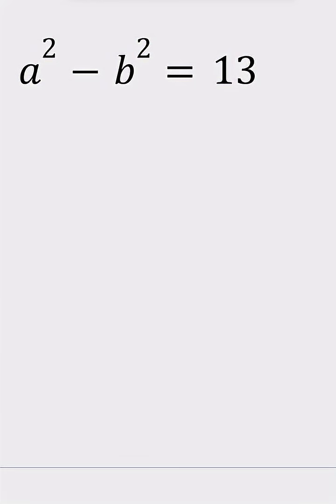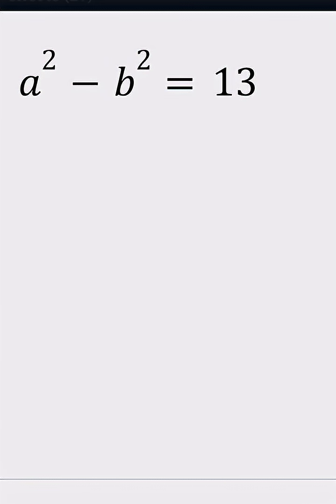Hello everyone. In this video we're going to be solving a Diophantine equation. So a and b are integers and a squared minus b squared is equal to 13. Can we solve for a and b?